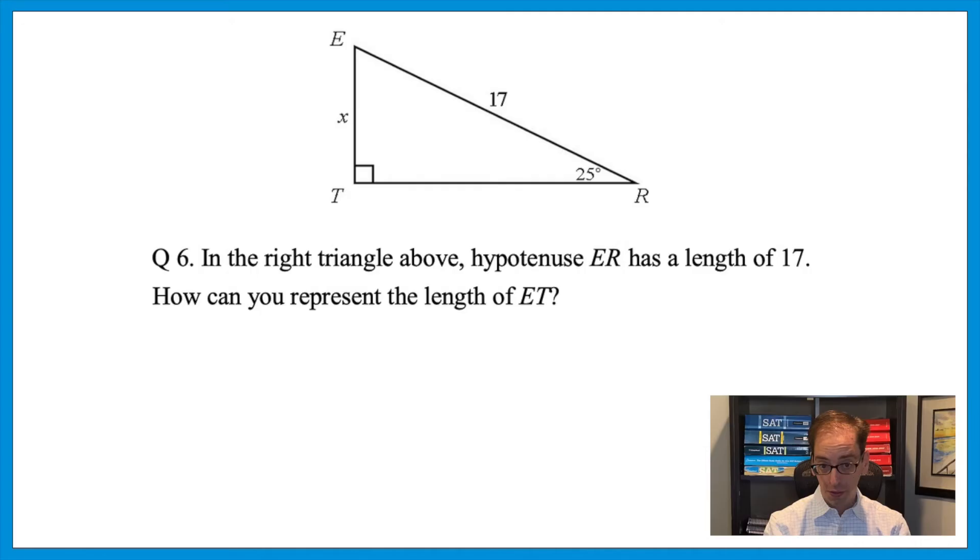Let's see how this concept can also come up on a trigonometry question. Question 6. In the right triangle above, hypotenuse ER has a length of 17. How can you represent the length of ET? In order to get started, we need to know what trigonometry ratio is in play here, so to speak. So let's think about it. We have 25 degrees, an x, which is the opposite, and 17, which is the hypotenuse. So in terms of SOHCAHTOA, that means we want the sine ratio. Sine deals with opposite and hypotenuse. So if sine equals opposite over hypotenuse, press pause and see what you can do.